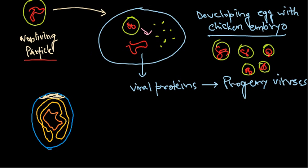The red-colored region represents the chicken embryo. The yellow-colored region inside is called the allantoic cavity. The blue-colored section surrounding it is called the chorioallantoic cavity. The yolk sac is also visible as a distinct region. So these are the different regions within the developing egg used for culturing.